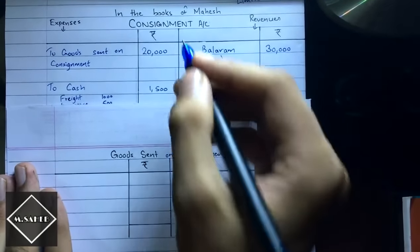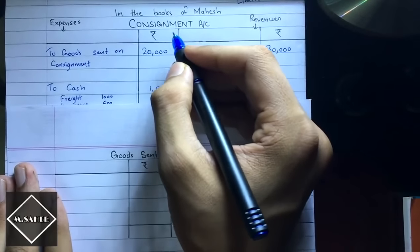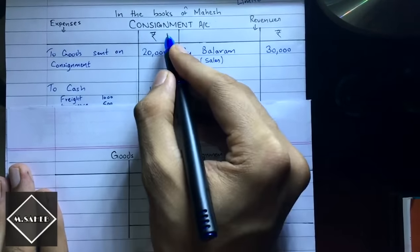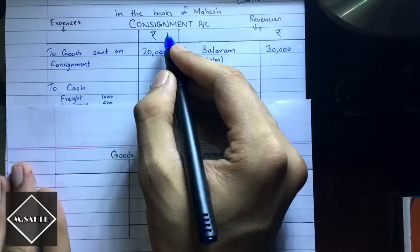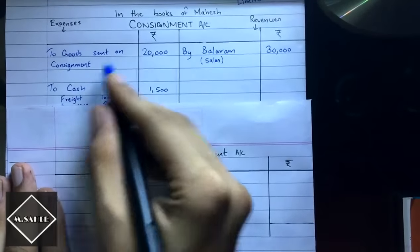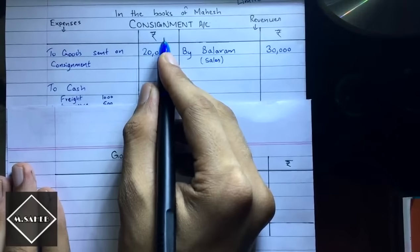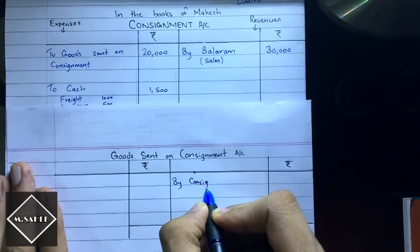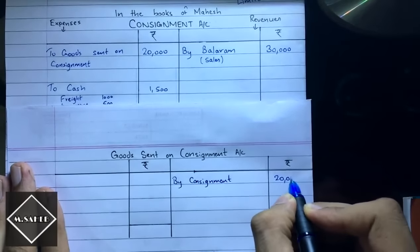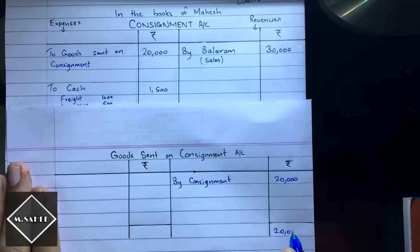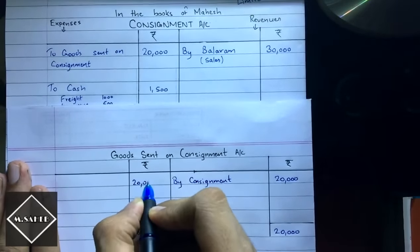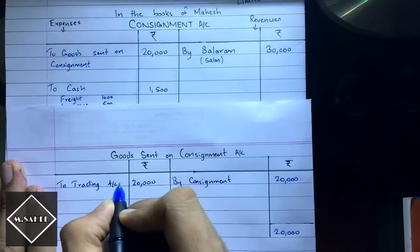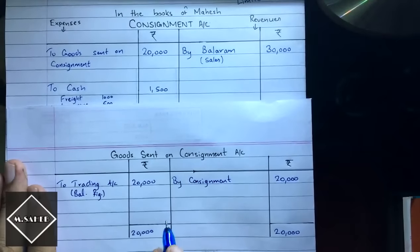Next we prepare the goods sent on consignment account. We check the consignment account and see that 'Goods Sent on Consignment' appears on the debit side, so we credit it here as 'By Consignment — rupees 20,000.' We then balance this account and transfer the balance of rupees 20,000 to the trading account.